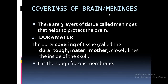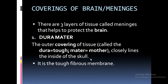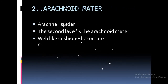The coverings of the brain are also known as meninges. There are three layers of tissue called meninges that help to protect the brain. The first layer is the dura mater — the outer covering. It is called dura because 'dura' is a Latin term meaning tough, and 'mater' means mother, as a mother is always caring and protecting. The dura mater closely lines the inside of the skull and is composed of fibrous connective tissue.